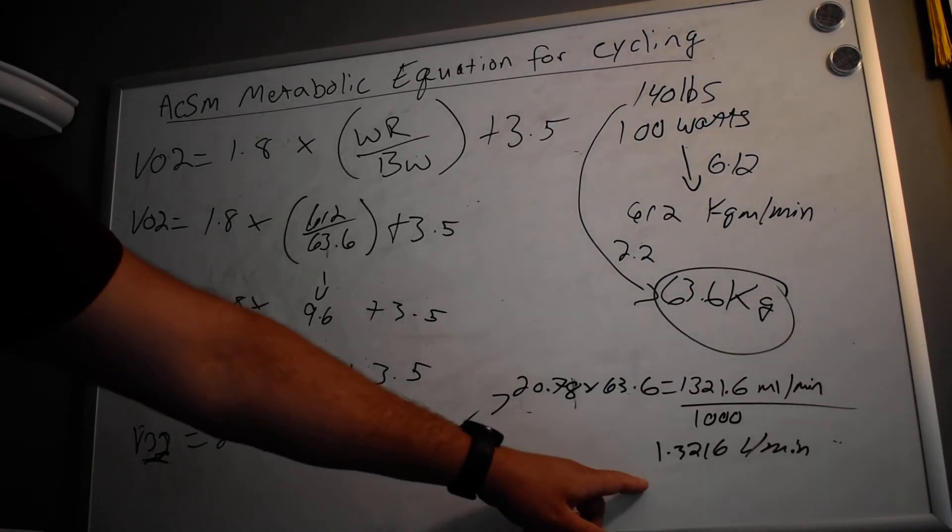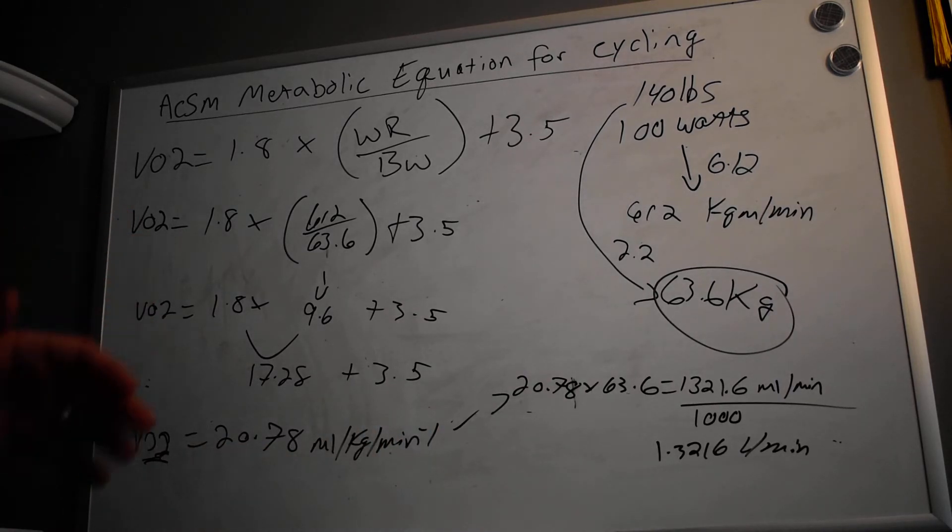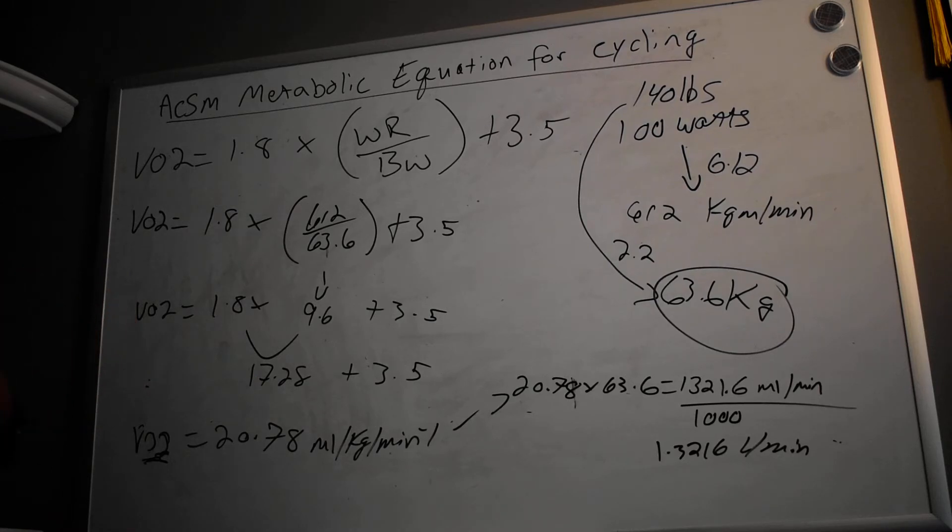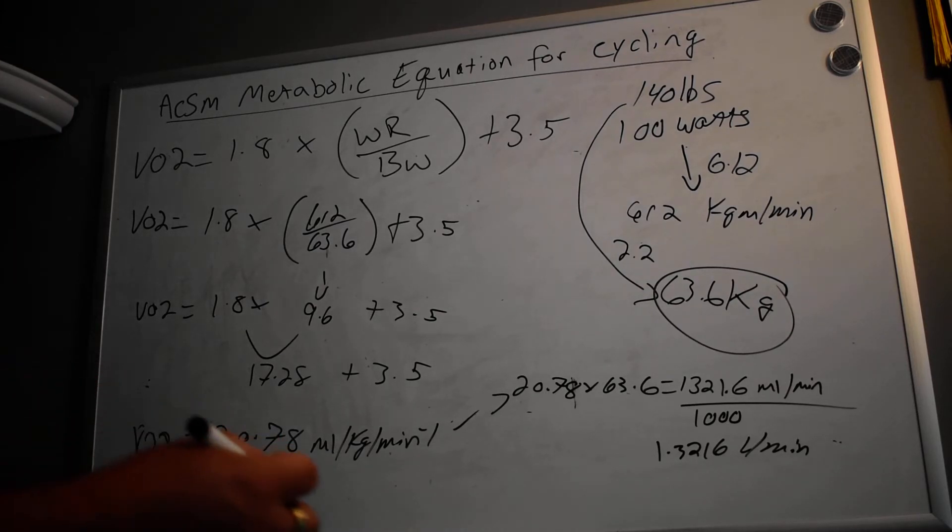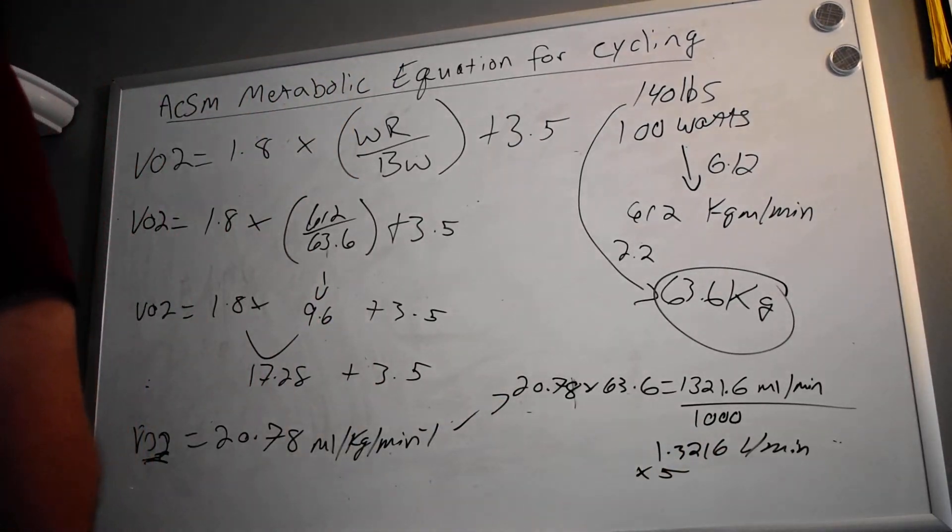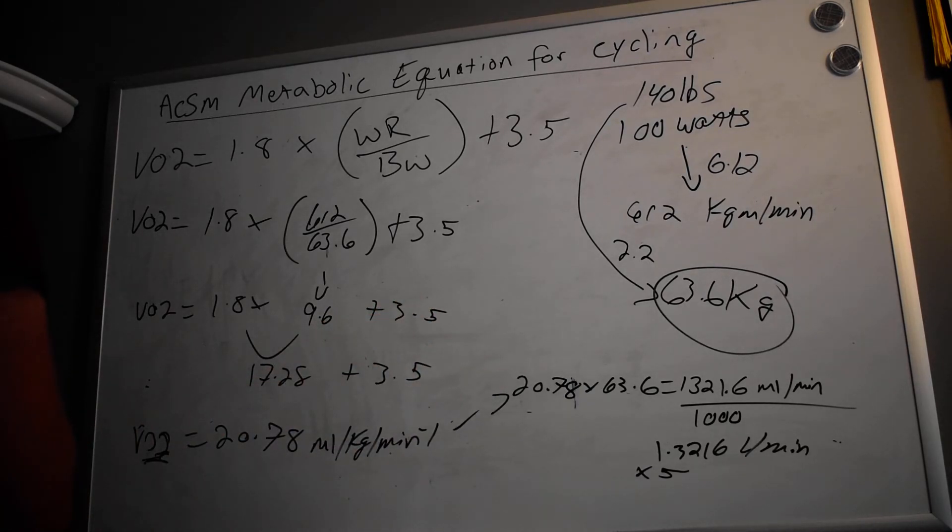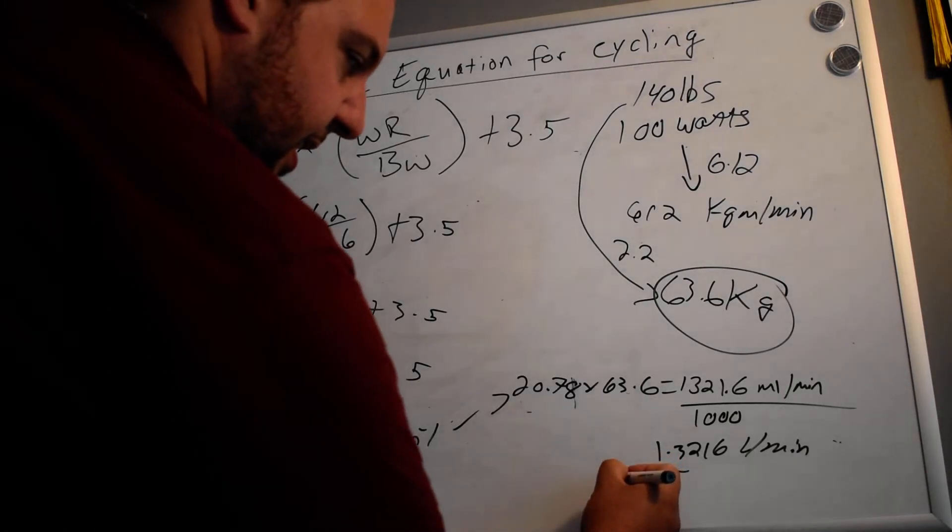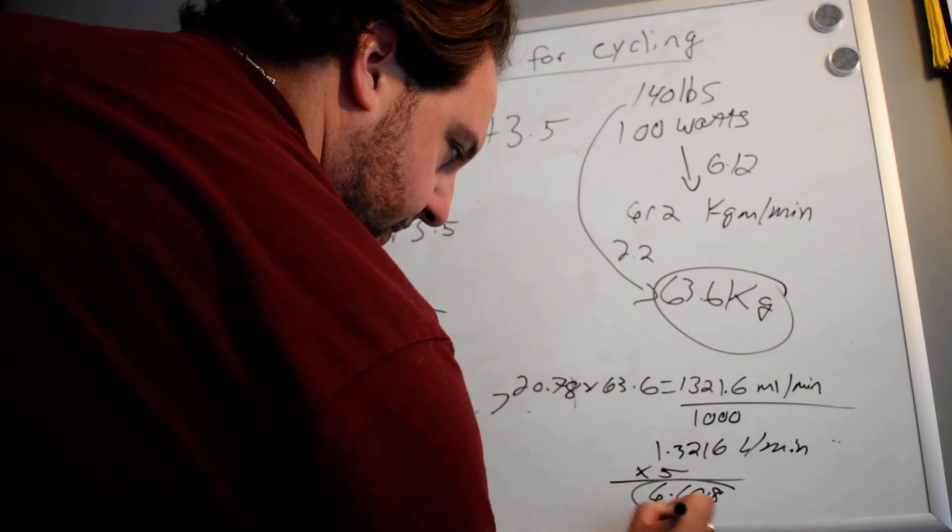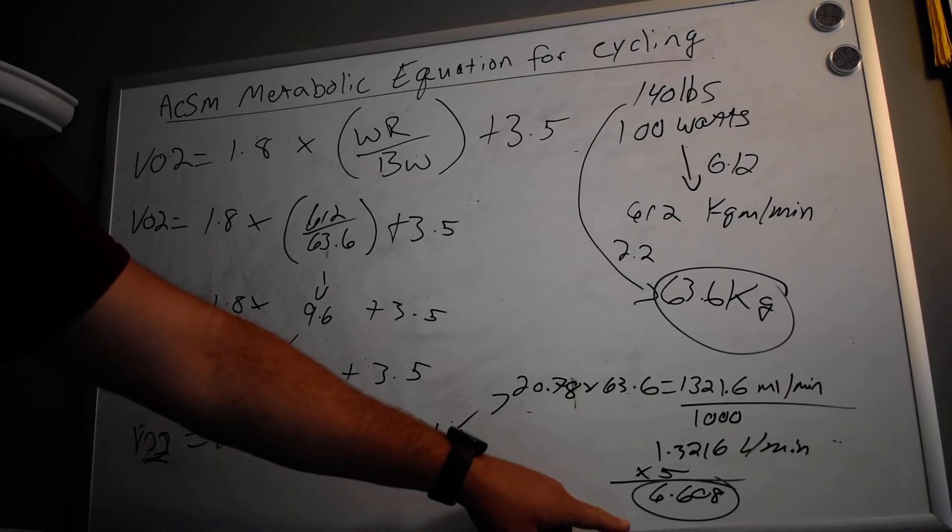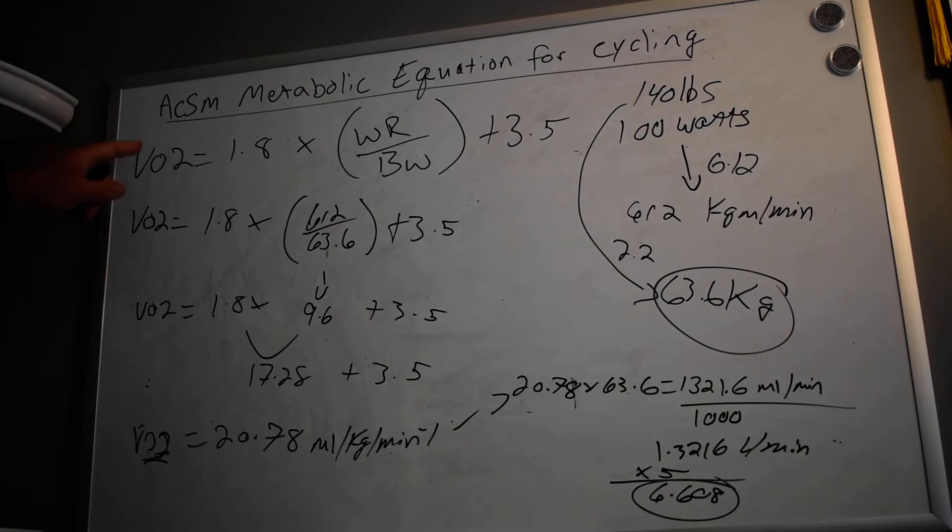Once we have this 1.32, you multiply that by 5. Five is the constant that we estimate—for every one liter of oxygen that we consume (not that we breathe in or that we move, because that's different), but for every one liter that we consume, it's roughly the expenditure of 5 kilocalories. So you're just going to take that 1.3216, multiply it by 5, and you're going to get 6.608. That number represents calories per minute expended at this work rate for a 140 pound individual.